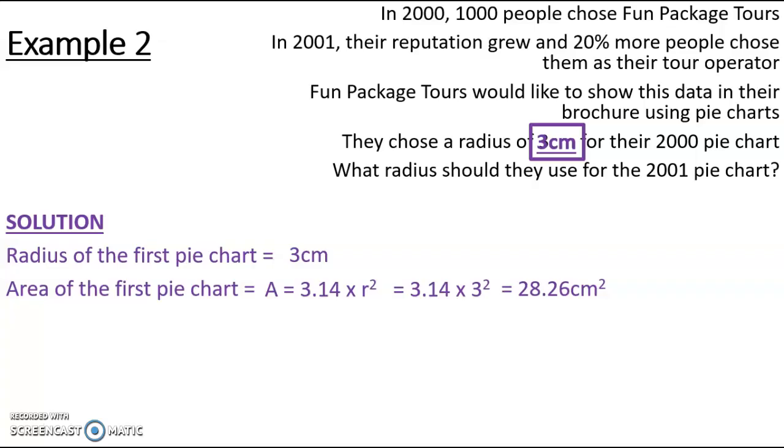Now I need to know how much bigger or smaller my pie chart needs to be. So it tells me in this question that it grew by 20% more. That means it's going to increase by 20%, so I'm going to need to times it by 1.2. An increase of 20% is a multiplier of 1.2.